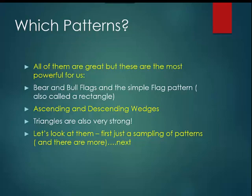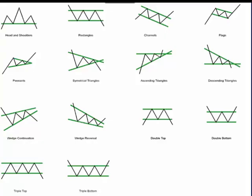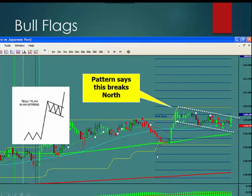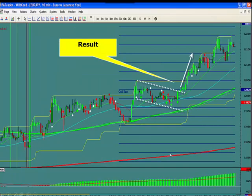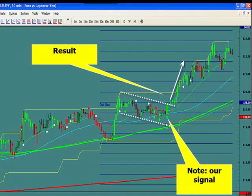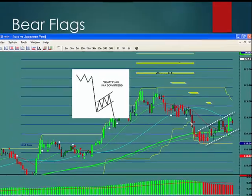Here's a sampling of 14 patterns that you need to know — you have to practice each and every one of these. So here's a bull flag. This little icon from chartpatterns.com tells you that in a bull flag, which is in an uptrend, it breaks to the north. So this pattern says we're going to break to the north. There's the result — it breaks to the north, and you can see our signal right there even before it broke out.